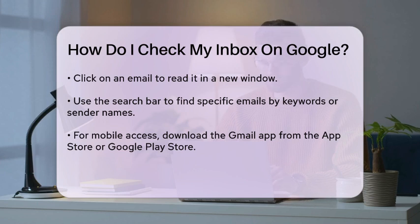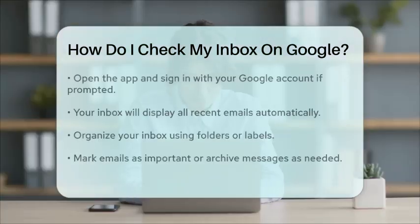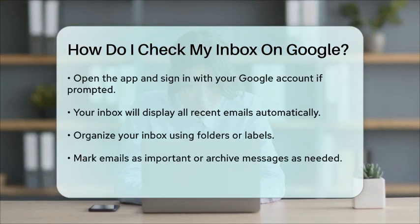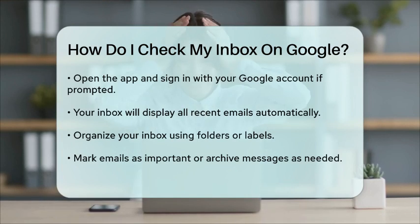To check your inbox on a mobile device, open the Gmail app, which you can download from the App Store or Google Play Store if you do not have it installed. Once you open the app, sign in with your Google account if prompted. Your inbox will appear automatically, showing all your recent emails.